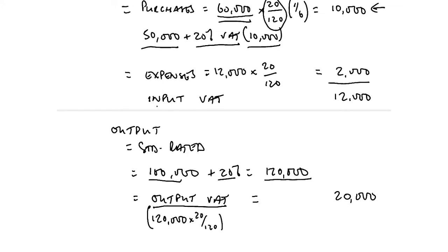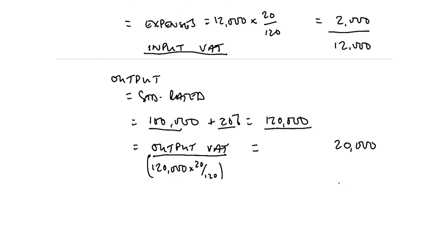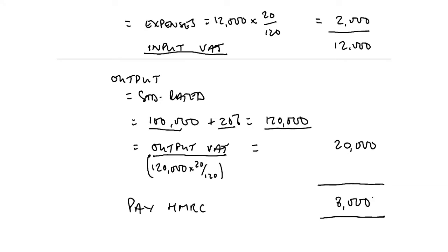Against the output VAT, we can offset our input VAT of £12,000 suffered on goods purchased and expenses incurred. So on a VAT return — normally produced quarterly — we account for the excess of output VAT over input VAT. We would have to pay HMRC the difference between the output VAT on sales of £20,000 and the input VAT on purchases and expenses of £12,000. So for this particular period, the business would have to pay out £8,000 of VAT.